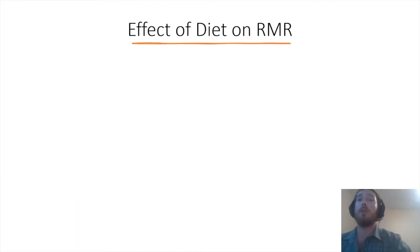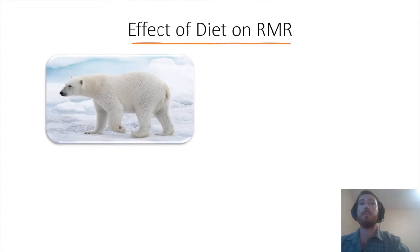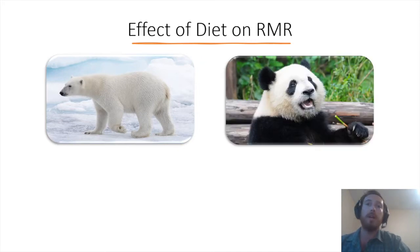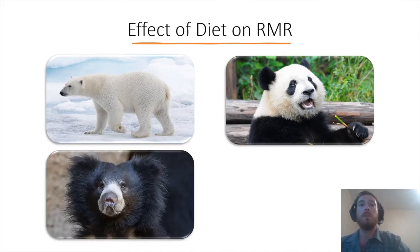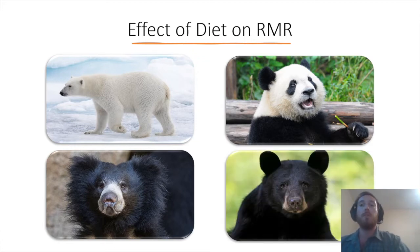Diet also tends to have a large effect on resting metabolic rate. Carnivores, such as the polar bear, tend to have relatively higher metabolic rates. In contrast, herbivores such as the giant panda tend to have relatively low metabolic rates. Large-bodied insectivores such as the sloth bear also tend to have lower metabolic rates. And omnivores such as the American black bear tend to have more intermediate metabolic rates.